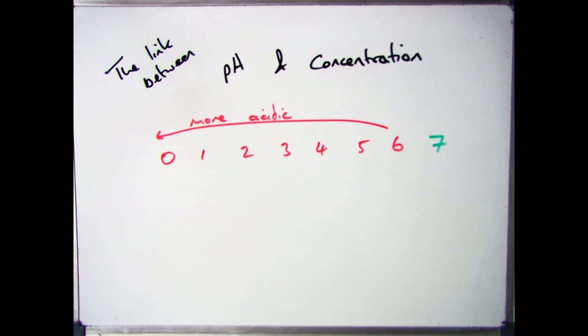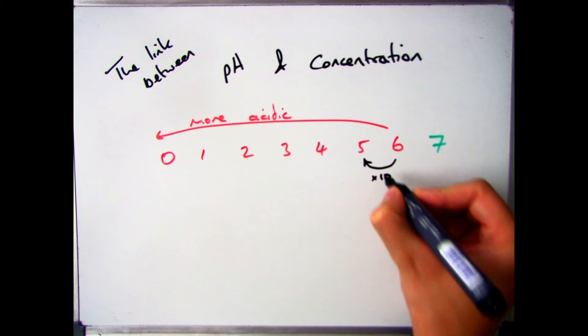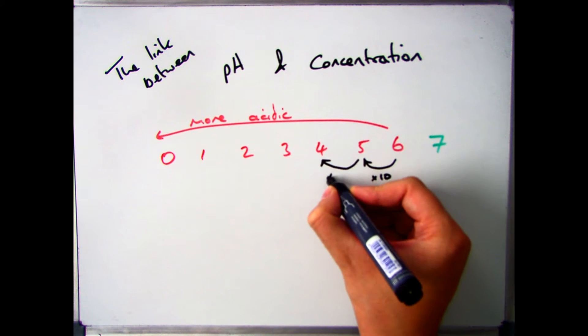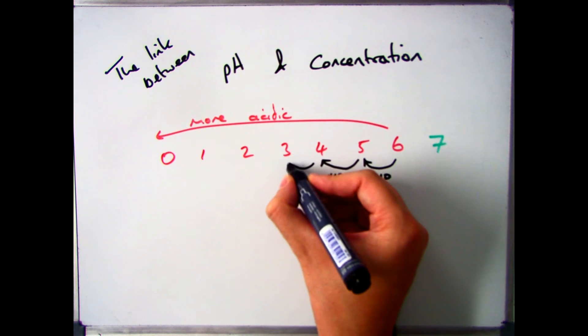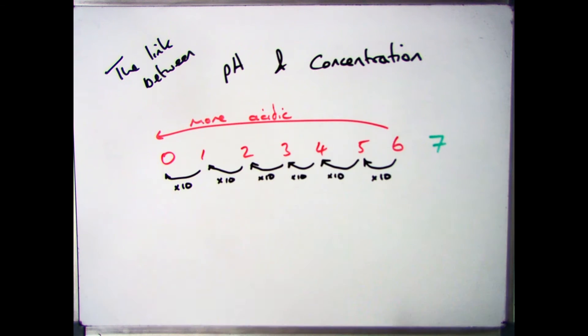What you perhaps don't know is that every time the pH decreases by 1, the concentration changes by a factor of 10. So pH 6 is 10 times less concentrated than pH 5, which is 10 times less concentrated than pH 4, and so on.